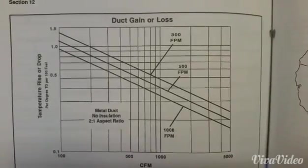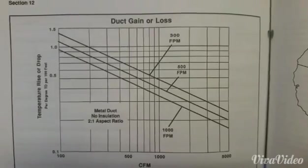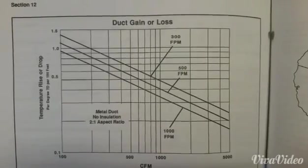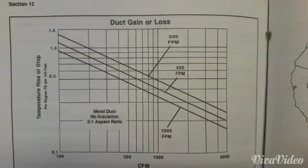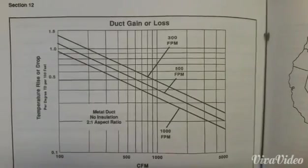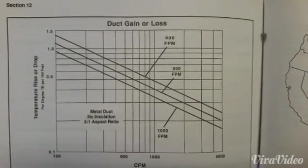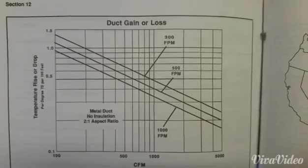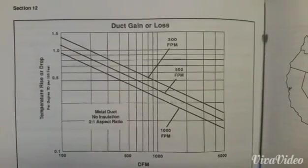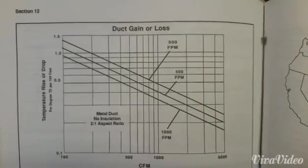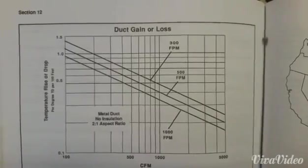So every degree on the left side of the table, you see 0.1, 0.5, 1.0, or 1.5 will be per temperature degree difference. So that 1 would then be 20, because we have a 20 degree difference between our duct temperature and crawl space temperature.